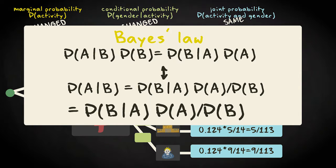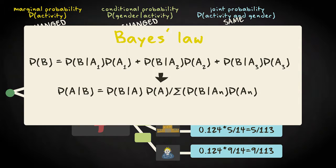It is in fact the shorthand version, because often the marginal probability of B is not known directly but has to be computed from the sum of the different conditional probabilities for B given an outcome of A.